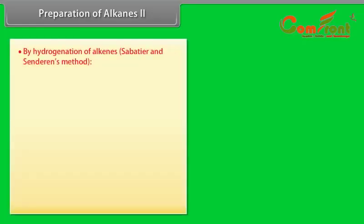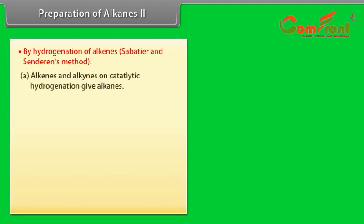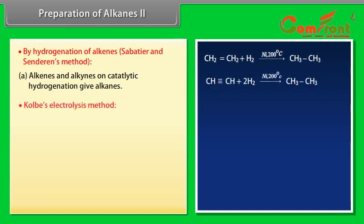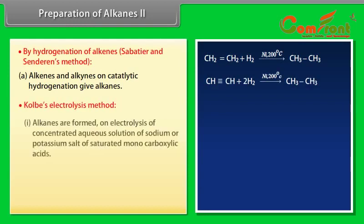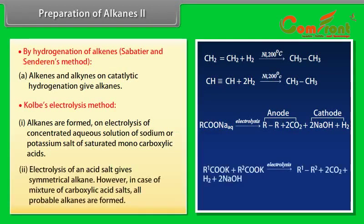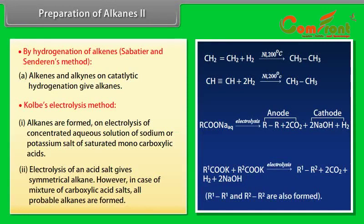Preparation of alkanes, part 2: By hydrogenation — Sabatier and Senderens' method — alkenes and alkynes on catalytic hydrogenation give alkanes. Kolbe's electrolysis method: alkanes are formed on electrolysis of concentrated aqueous solution of sodium or potassium salt of saturated monocarboxylic acids. Electrolysis of an acid salt gives a symmetrical alkane. However, in the case of a mixture of carboxylic acid salts, all probable alkanes are formed.